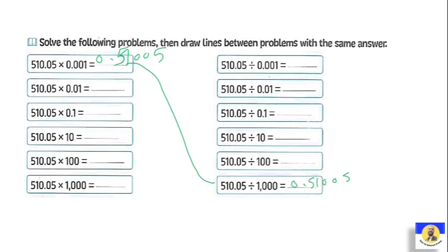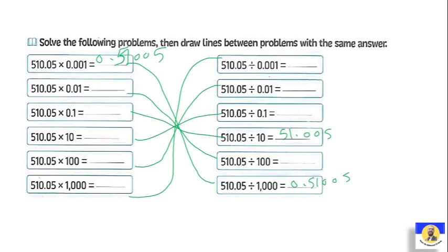The next: by 0.01 يبقى كأني بعمل divided by 100. By 0.1 كأني بعمل divided by 10. So divided by ten يعني: 51.005. By ten هي هي divided by 0.1. By 100 هي هي divided by 0.01. By 1000 هي هي 0.001. الأنصر بتاعتك بتطلع عادي: هنا 5100.5، هنا 51005، وهنا 51005 zero.